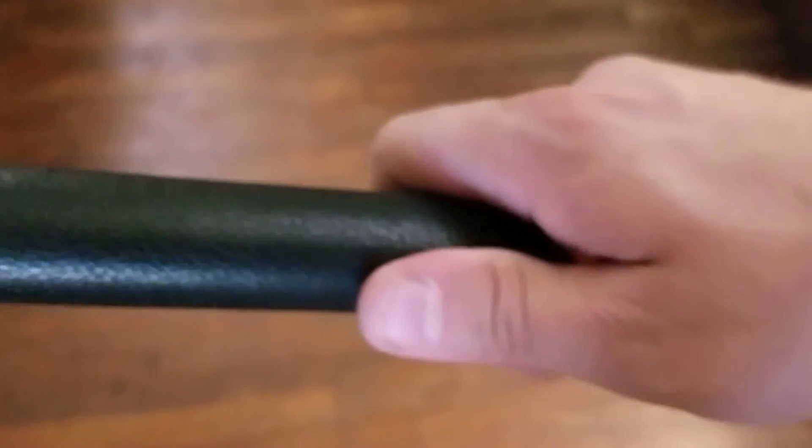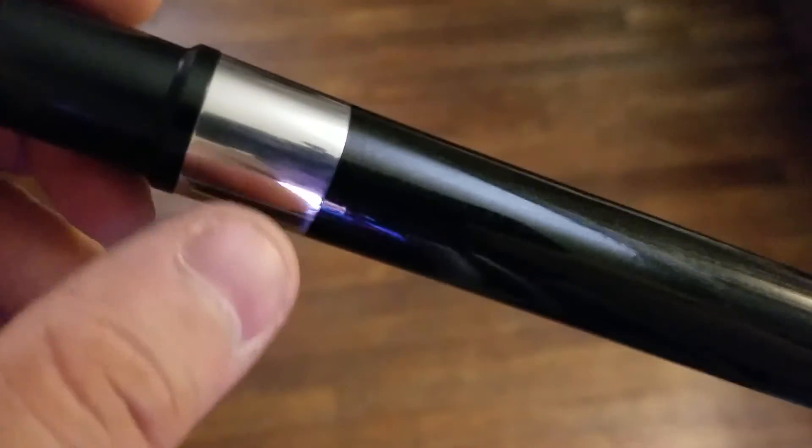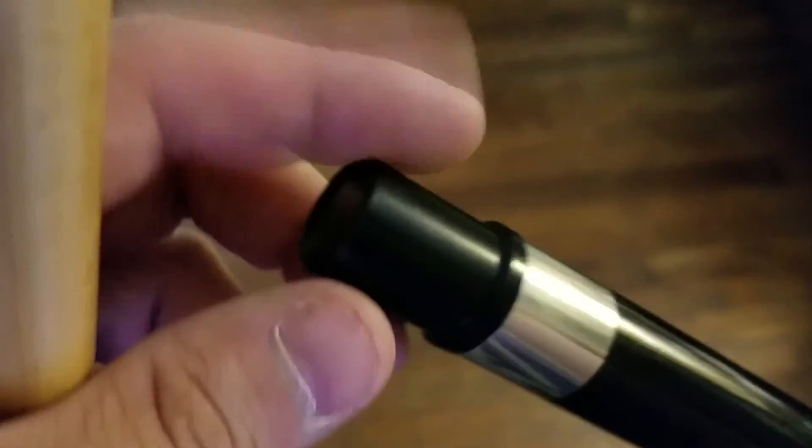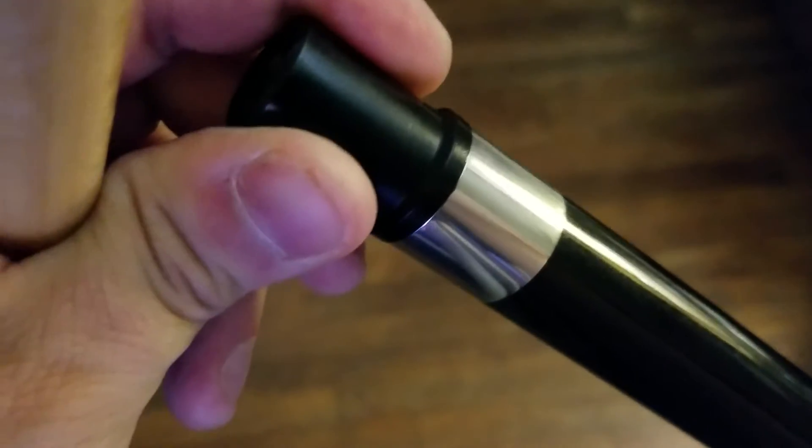This wrap is so comfortable in your hand - it's got a little squishiness to it. No markings on the rest of the butt. It's a really nice kind of metallic black. The joint comes with joint protectors as well and that Predator case. These are the Uniloc joints.